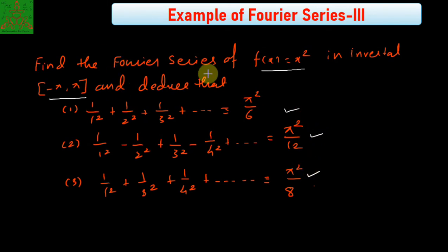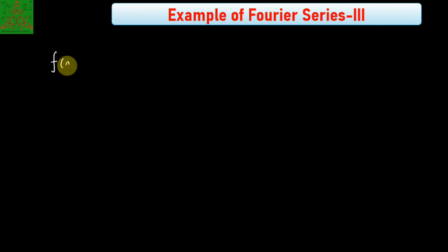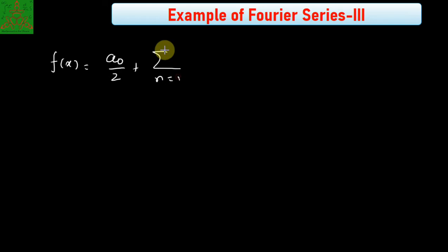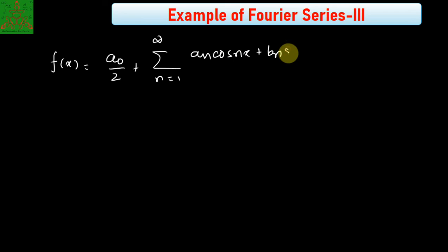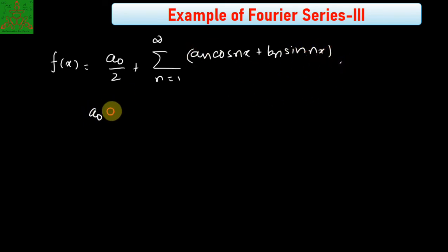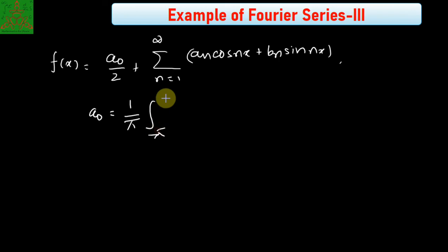Let us see the definition of the Fourier series. The Fourier series of a function f(x) is defined as a₀/2 plus the summation from n = 1 to infinity of aₙ cos(nx) plus bₙ sin(nx), where a₀, aₙ, and bₙ are the Fourier coefficients that we need to calculate for the given function.